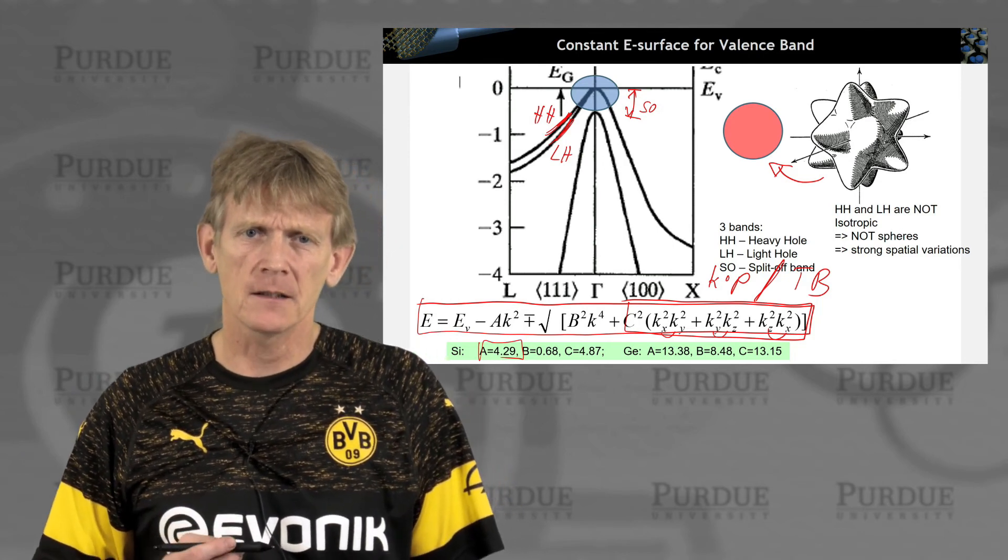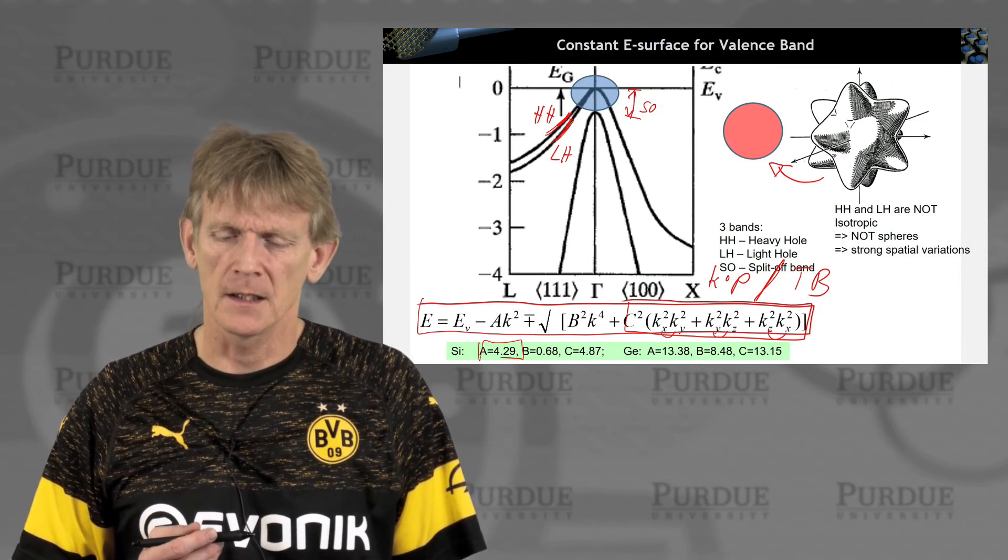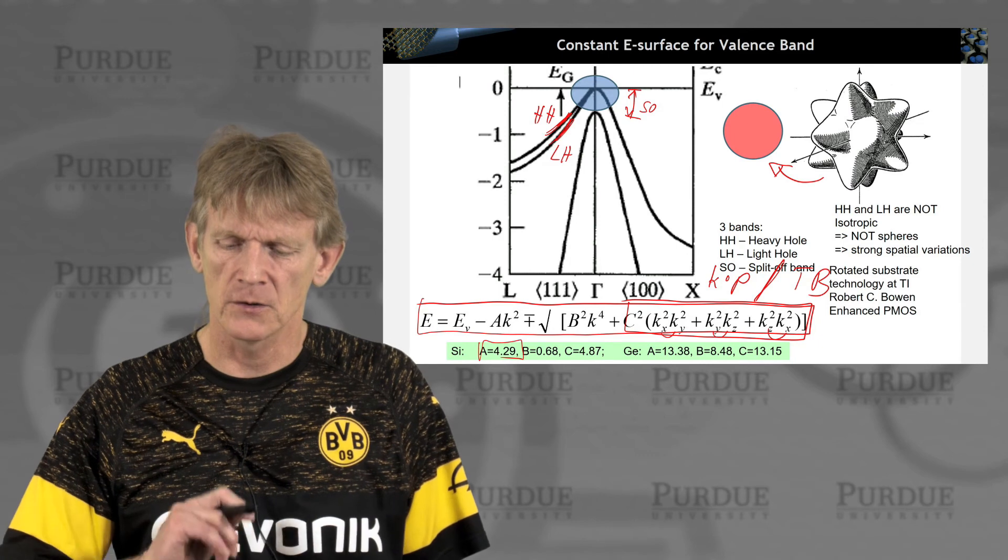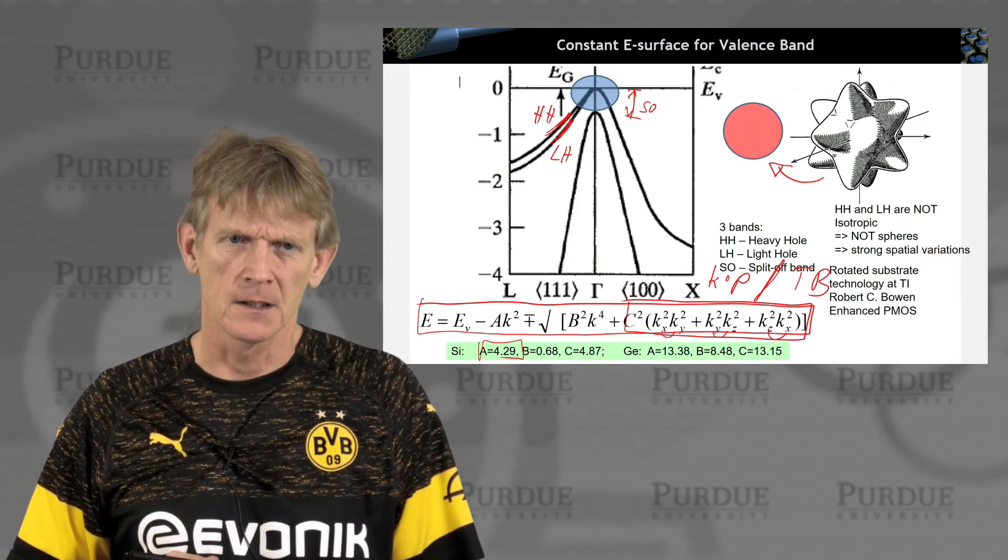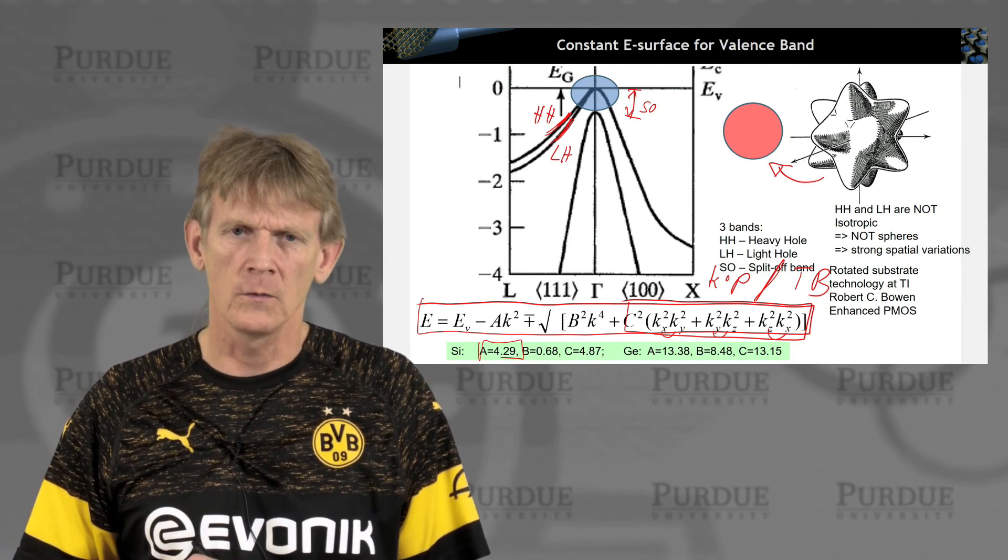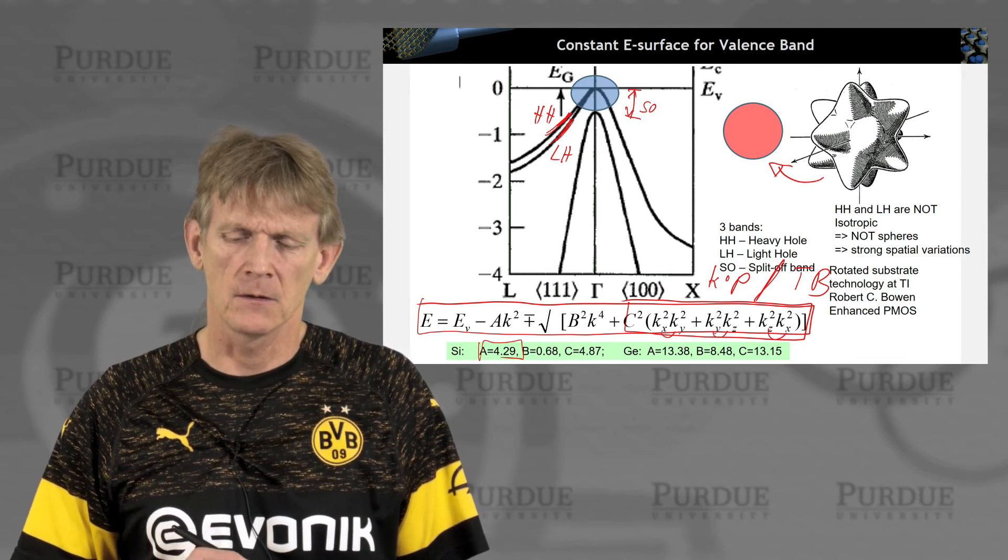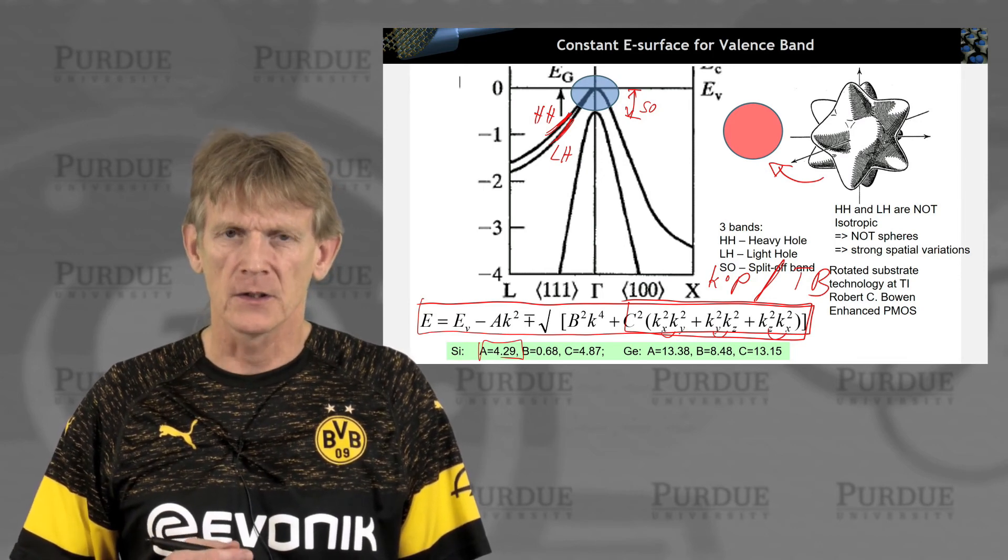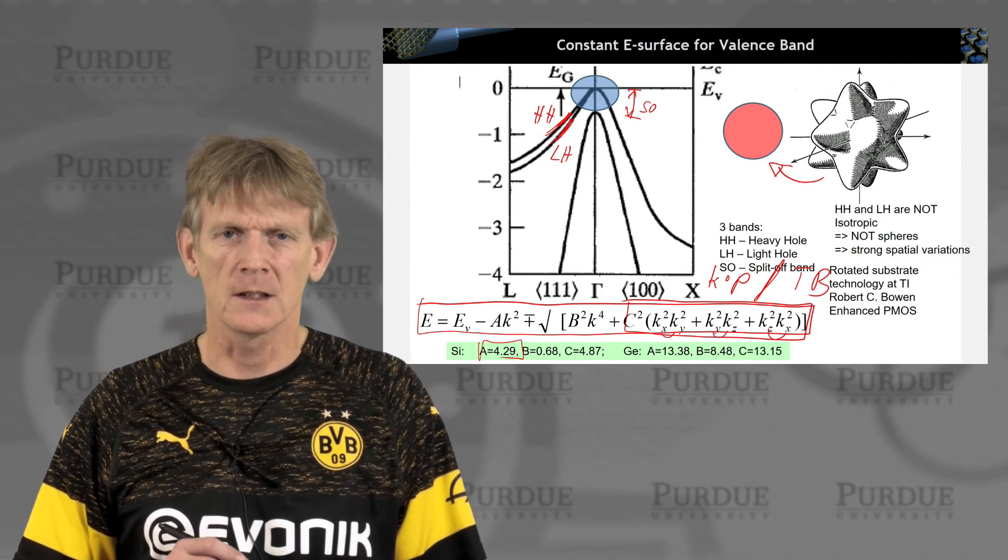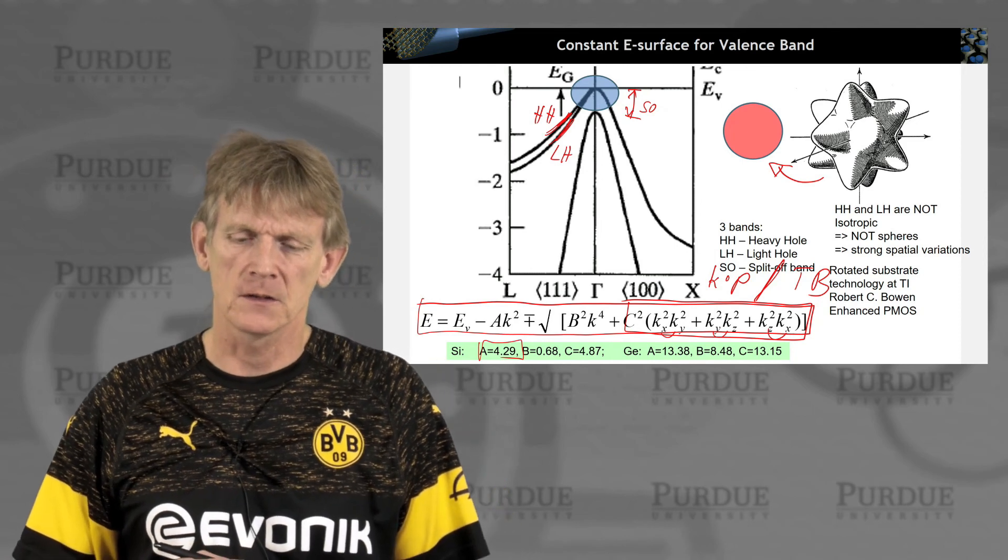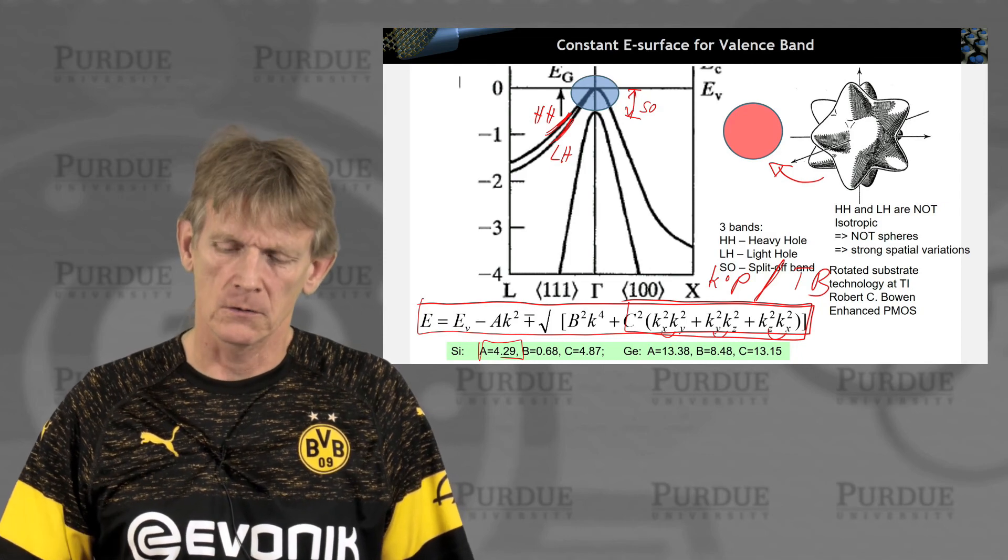But there's also really technical, relevant innovations that come out based on this anisotropy. So, my best friend, Chris Bowen, when he was at TI, he invented the rotated substrate technology that made PMOS, whole MOS devices, have very strong performance without applying strain. So, that was an invention in ballpark 2000, 2001, and it had real impact on real transistors. So, understanding these dispersions from a very fundamental way is actually very critical.